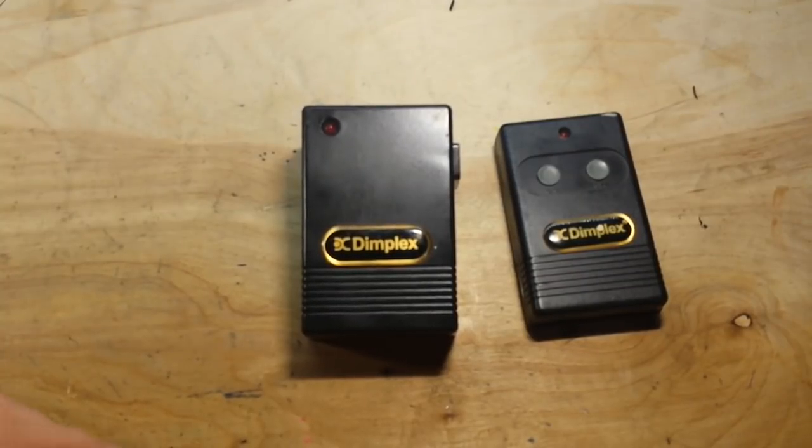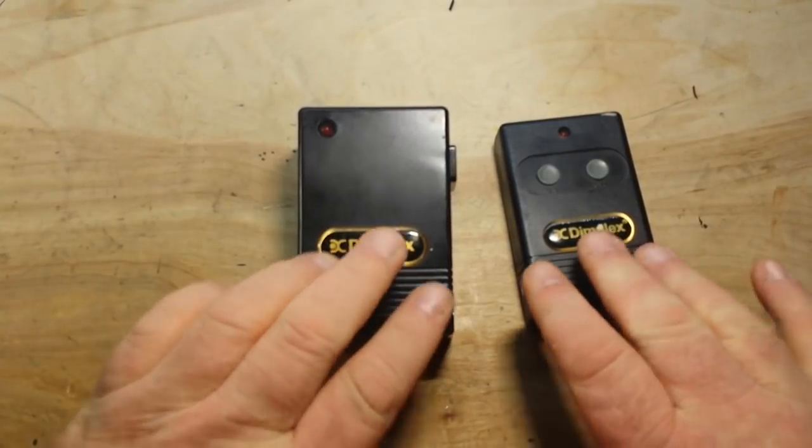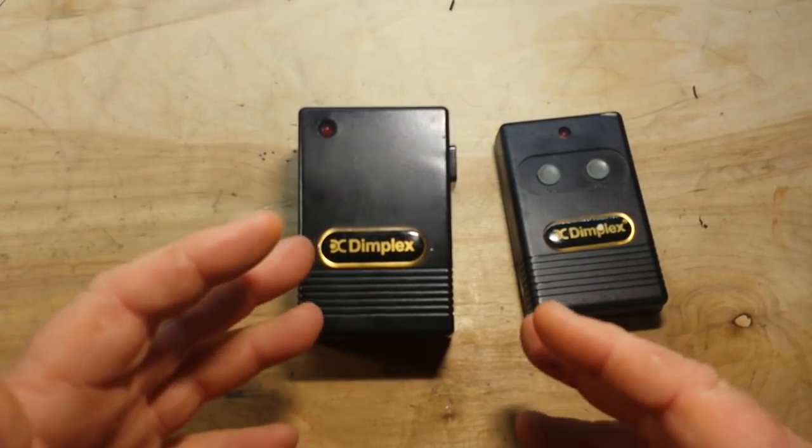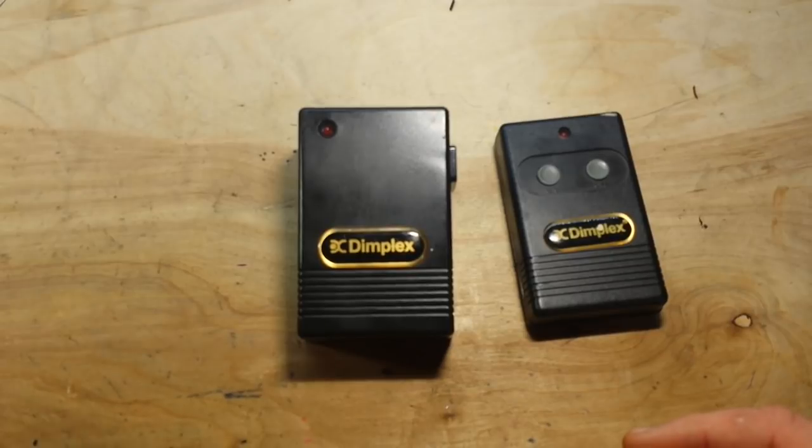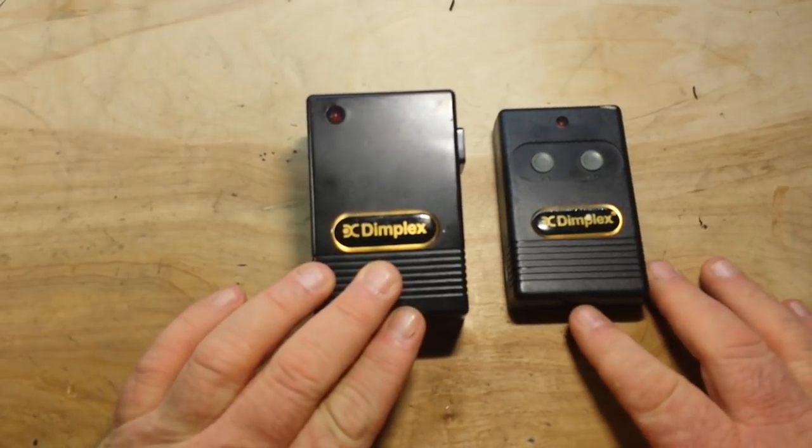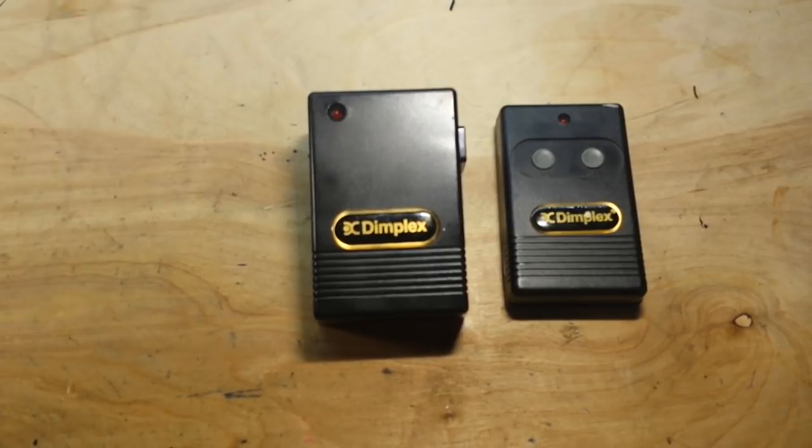Hey, what's happening guys? Today we're going to take a look at these little units here. This is home automation pre-internet, pre-Google Home, pre-Alexa, pre just about everything. These are from Dimplex, who are makers of electronic fireplaces and such like that, but people bought these and used them for lights and all sorts of controls.